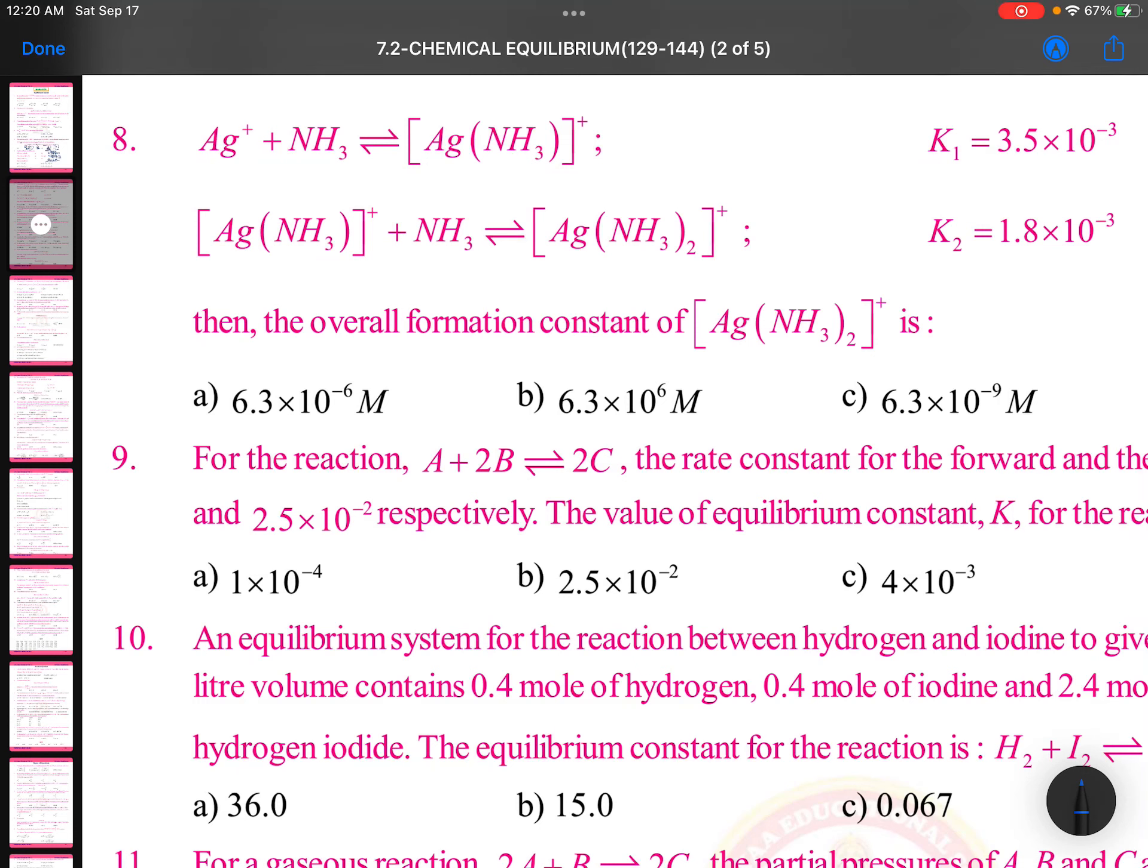Chemical equilibrium, this is one of the easiest questions you see. Ag plus plus ammonia, Ag(NH3) complex is formed, and again it is joining with one more ammonia to